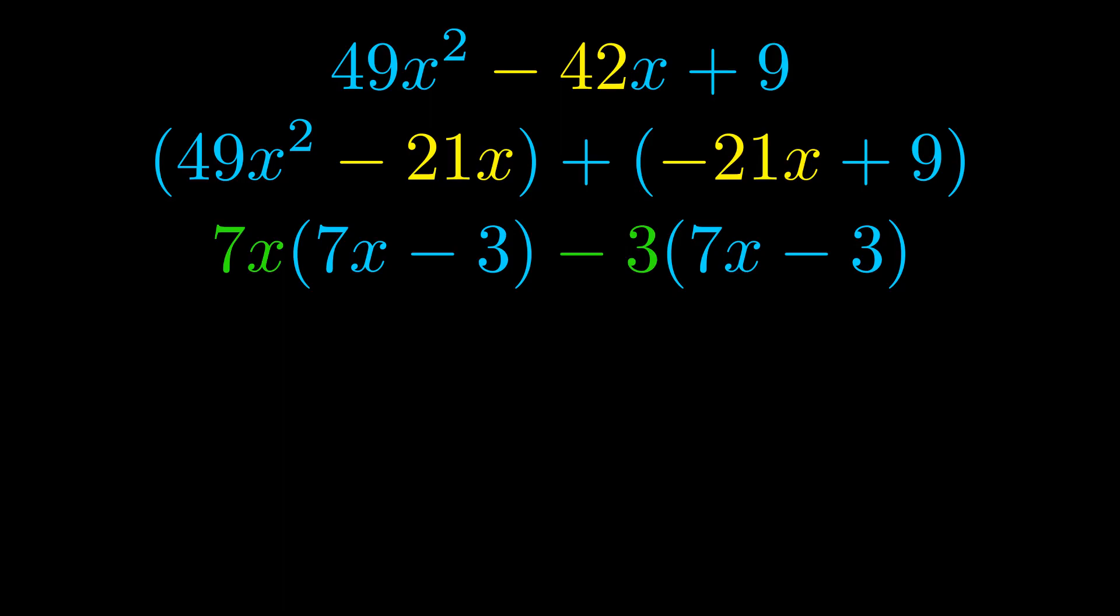Notice also how what remains inside of the parentheses is the same in both cases. The blue values are the same. Those blue values will become one of our factors and we will combine the two green values, the GCFs that we pulled out, to get the other one. And that is our fully factored equation.